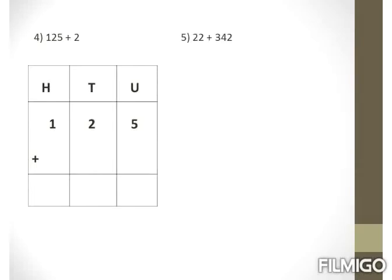Example 4: 125 plus 2. Here we have a 3-digit number 125 and a single-digit number 2, so we arrange them properly. In units place: 5; tens: 2; hundreds: 1. The number 2 goes only in units place; tens and hundreds remain vacant. Adding units first: 5 plus 2 — count 2 more after 5: 6 and 7. Tens: 2 comes as it is. Hundreds: 1 comes as it is. Our answer is 127.